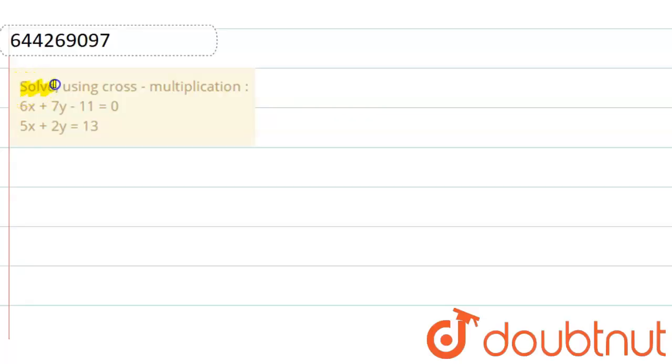Hello friends, the question is solve using cross multiplication: 6x plus 7y minus 11 equals 0 and 5x plus 2y equals 13.